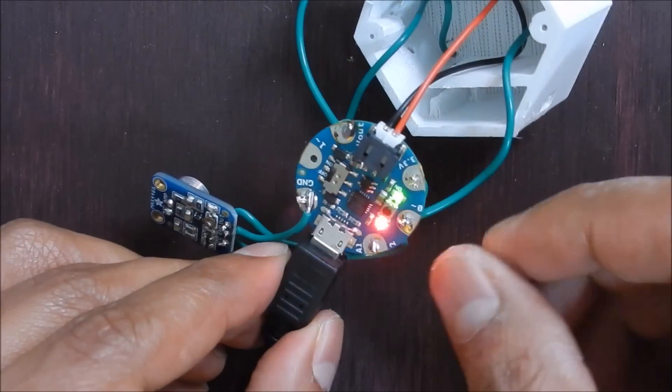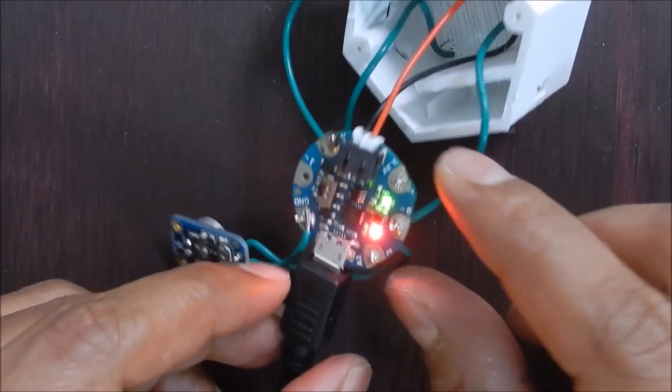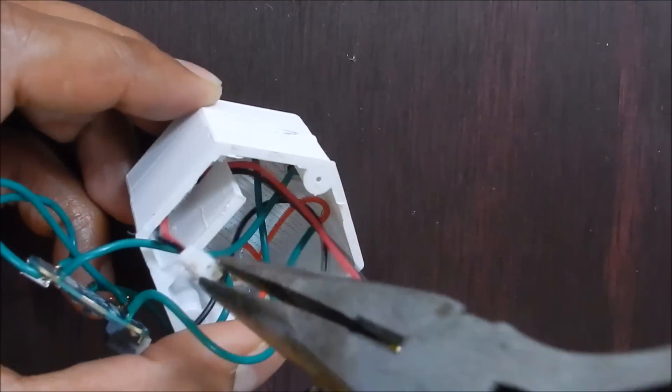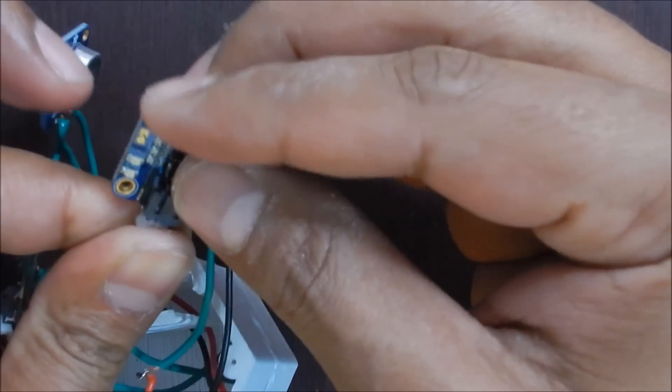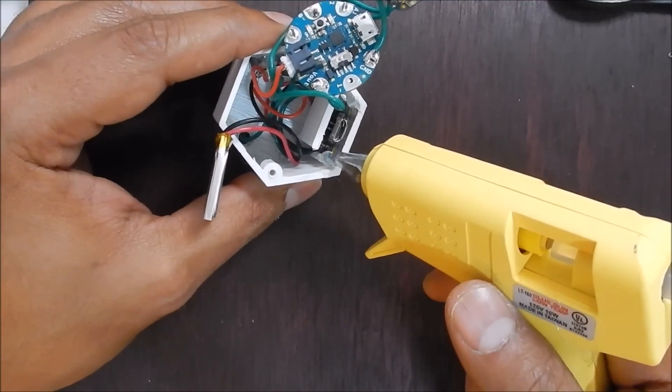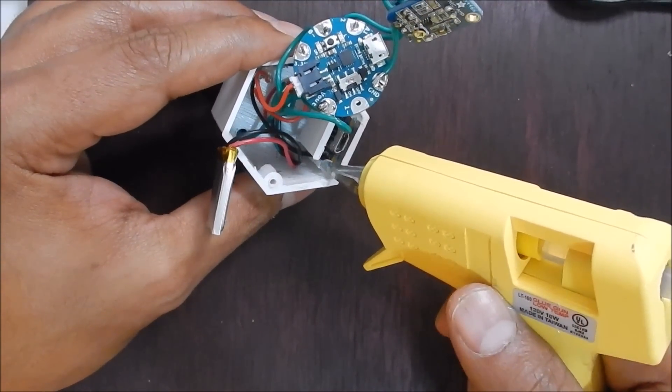At this point connect your Gemma to your computer and load the sketch. Guide the battery wire through the bottom of the charger compartment and connect the battery to the charger. Seat the LiPo charger in the enclosure and apply some hot glue to secure in place.